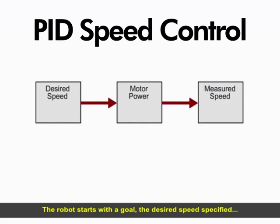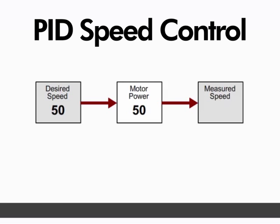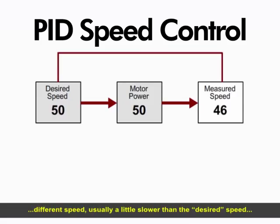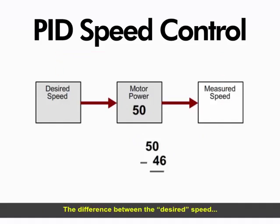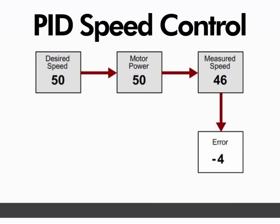Here's how it works. The robot starts with a goal: the desired speed specified by the programmer. Now if your motors were perfect, ideal motors, all you would need to do is set the power of the motor to match the desired speed, and that would be that. Real motors very rarely match up perfectly with ideal motors. Using the same power level, a real motor will achieve a slightly different speed — usually a little slower than the desired speed, due to the effects of friction on the motor and the wheel. The difference between the desired speed and the actual speed of the motor is called the error. This is the difference in speeds the robot needs to adjust for.